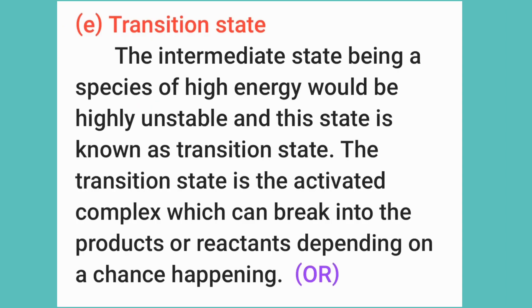Number E: Transition state. The transition state's definition is the intermediate state — being a species of high energy — which would be highly unstable. This state is known as the transition state. It is the activated complex which can break into reactants or products depending on chance.